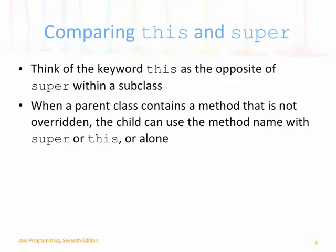We just use the keyword super to refer to the superclass. It's very much like the keyword this, except that this refers to the current object — whatever's inside the subclass — and super refers to the superclass. When a parent class contains a method that is not overridden, the child can use the method name with super, with this, or by itself, because they all refer to the same thing.